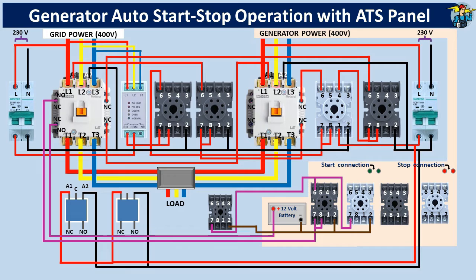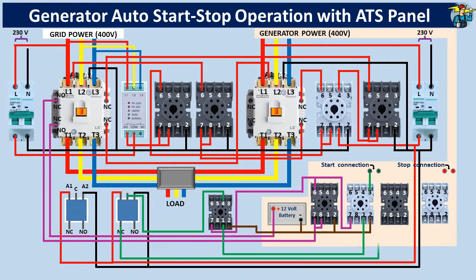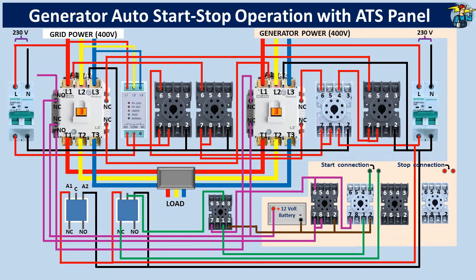The generator starting point connection line passes through 3 relays — through points 1 and 3 of the starter relay, points 1 and 4 of the start failure detection relay, and through the common and normally closed points of the SPDT relay that operates through the generator run signal. To stop the generator, take the line from the positive end of the battery and pass it through the normally closed auxiliary contact points of the generator contactor. This line must also pass through the normally open auxiliary contact points of the mains contactor before connecting to port number 7 of the generator stop timer.